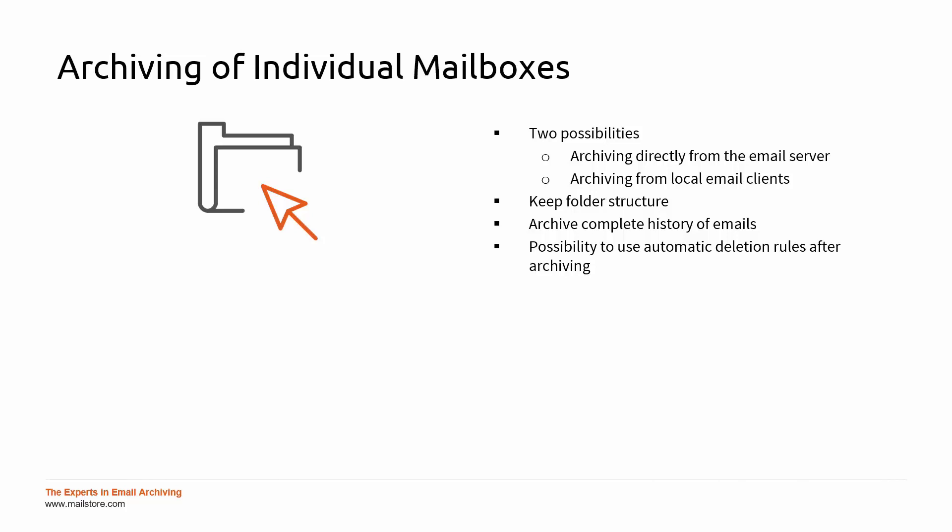In addition, you can use automatic deletion rules to ensure, for example, that all emails older than two years are deleted from the mailbox after they have been successfully archived. This way, you can permanently reduce the load on the email server. The emails remain accessible to users via the archive and can be searched.